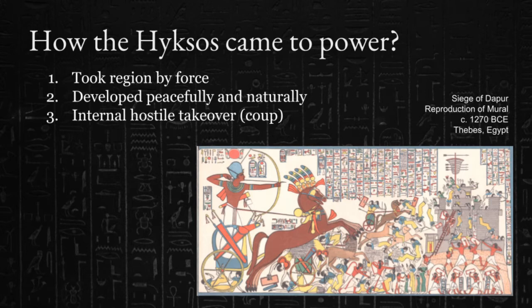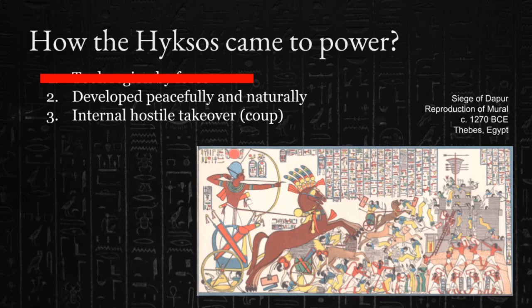For a long time, historians assumed that the Hyksos were these barbarian invaders that must have taken power by force. But recent scholarship now leans towards possibilities two or three. As rulers, the Hyksos had a blended cultural identity, taking advantage of both Egyptian traditions and their Levantine origins. While their royal titles, scribal activity, and religious habits were distinctly Egyptian, they still used the Near Eastern architectural style from their homeland, and even kept the Hyksos title as a personal identifier.